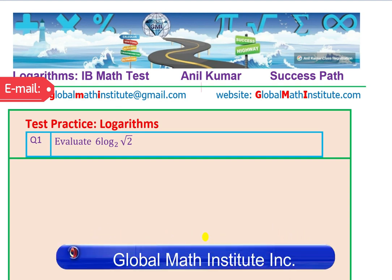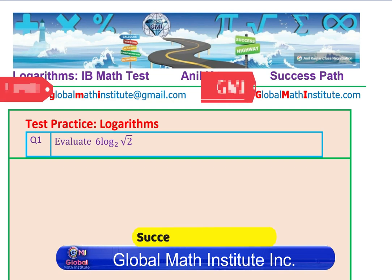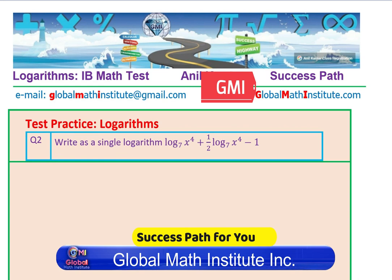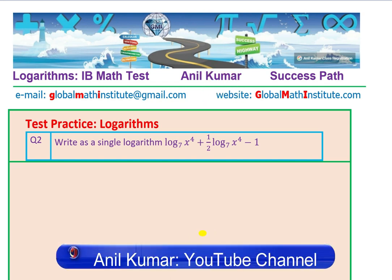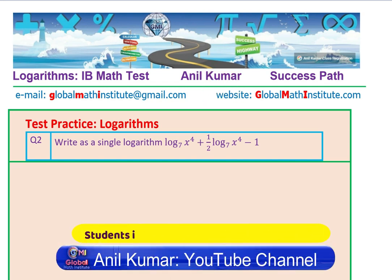The very first one is just to evaluate 6 log to the base 2 of square root of 2. Here is question number 2, where you need to write as a single logarithm: log to the base 7 of x to the power 4, plus half log to the base 7 of x to the power 4, minus 1.